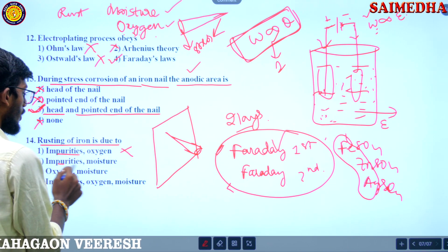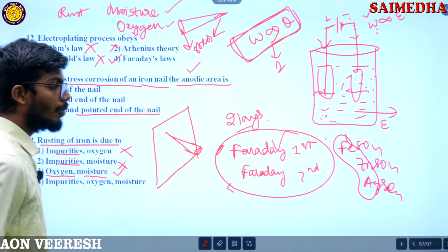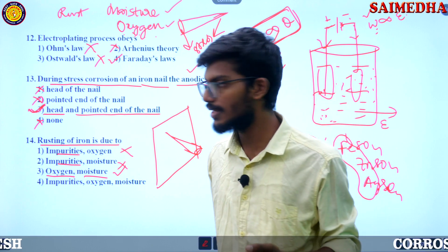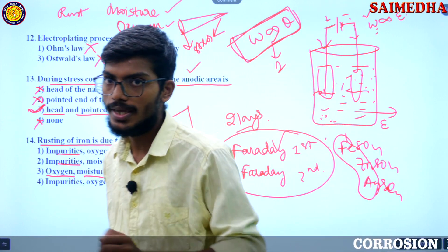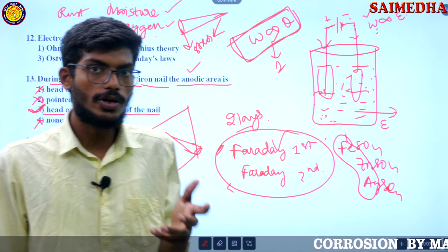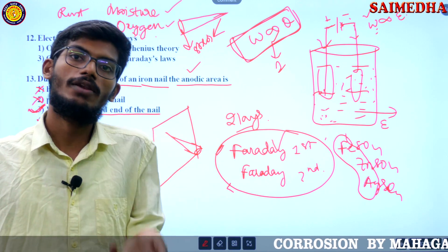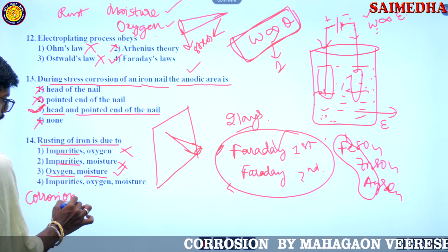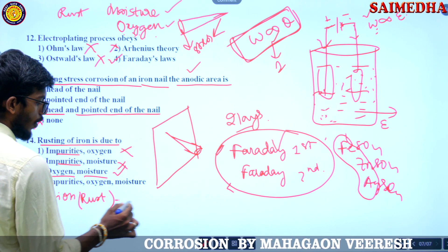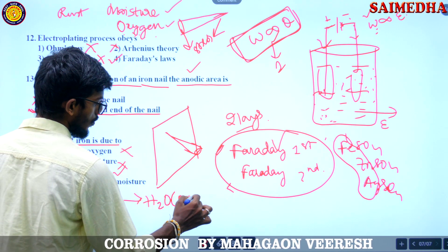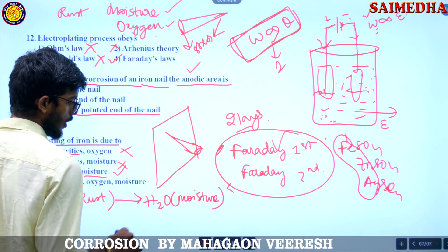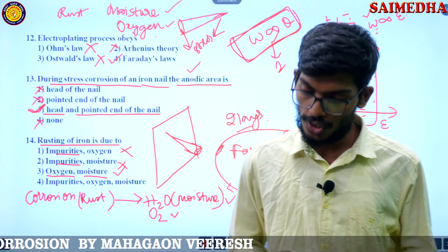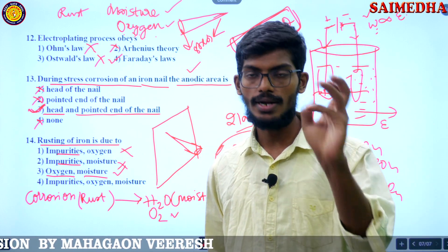Due to oxygen, anodic areas get formed, and with moisture present, the anodic area undergoes corrosion. For rusting or corrosion, both water (moisture, H2O) and oxygen are necessary. Remember very clearly: for rusting of iron, we require both moisture and oxygen.